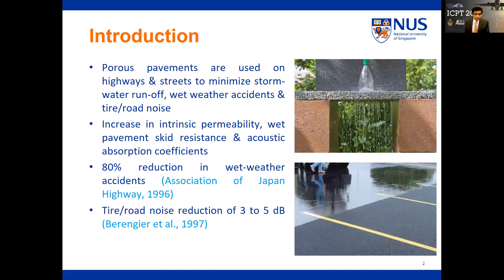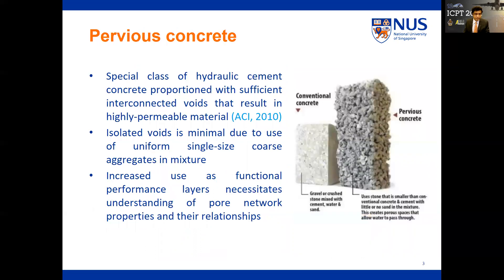Porous pavements are widely used today because of their increased permeability, pavement skid resistance, and acoustic absorption coefficients, resulting in reduced stormwater runoff, wet-weather accidents, and tire-to-road noise. It has been reported in past studies that wet-weather accidents have reduced by 80% and tire-to-road noise has reduced by 3 to 5 decibels when using pervious pavements.